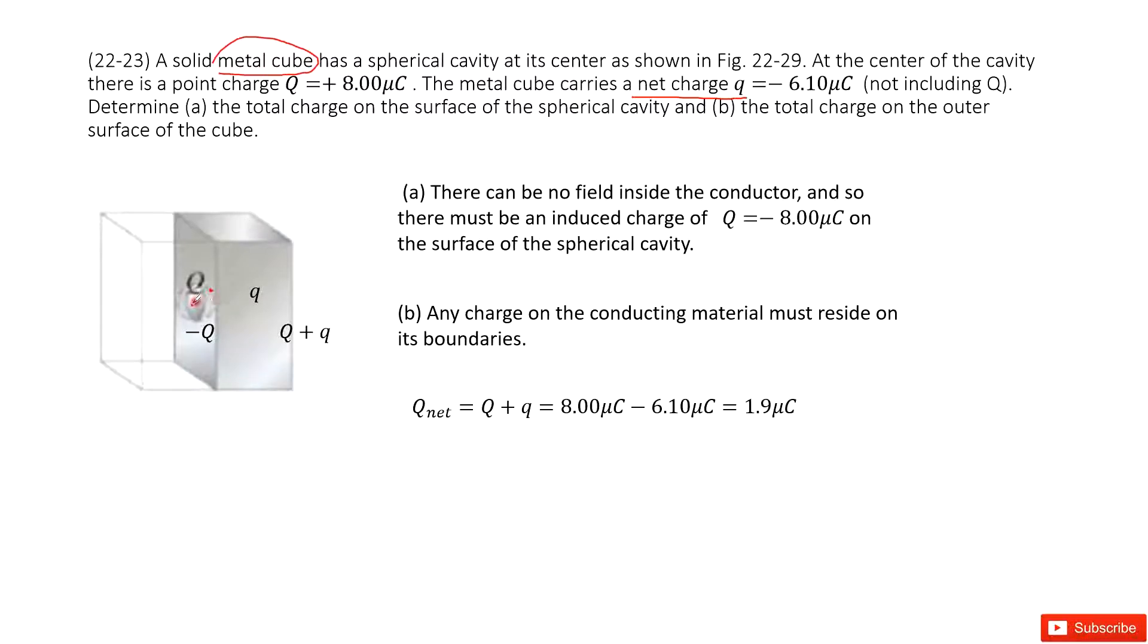And then we can see inside this cavity, this is a positive charge. So there will be the induced charge located at the surface for this cavity. Agree? Negative Q to keep it balanced. Agree? Therefore, the total charge on the surface of this spherical cavity is negative of the charge. That is negative 8 microcoulombs.